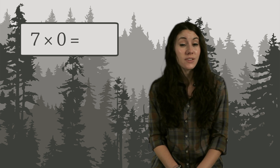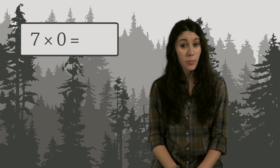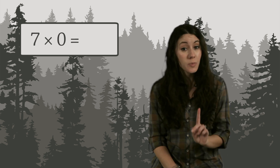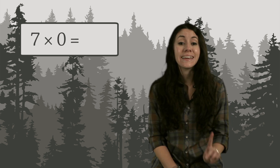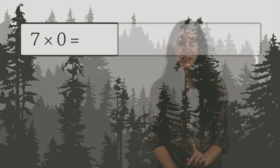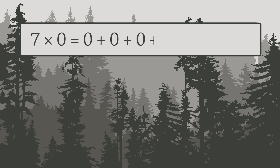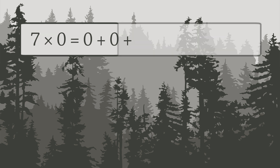Finally, what is seven times zero? Remember, multiplication is repeated addition. So seven times zero means you add zero seven times. This means seven times zero equals zero.